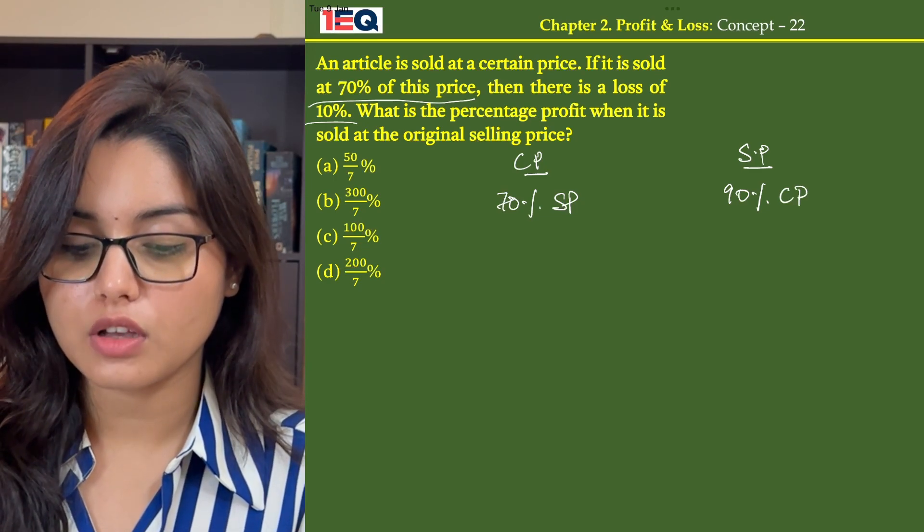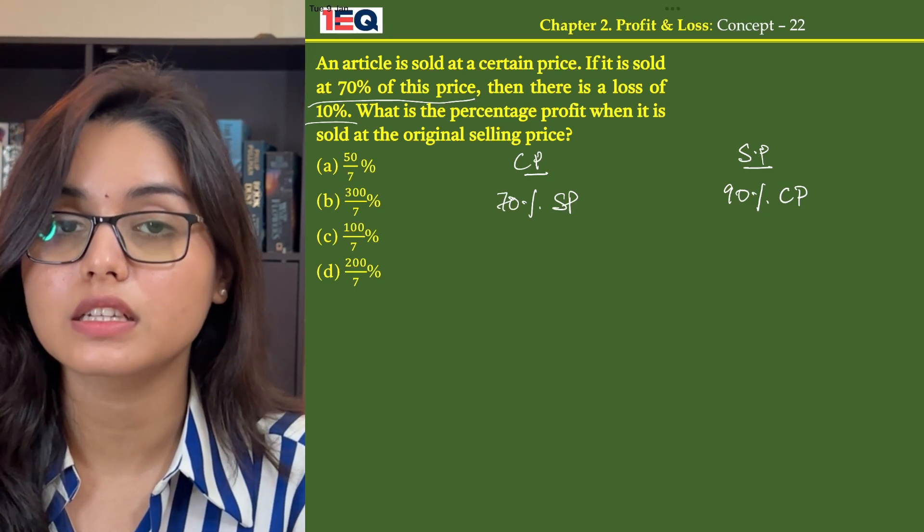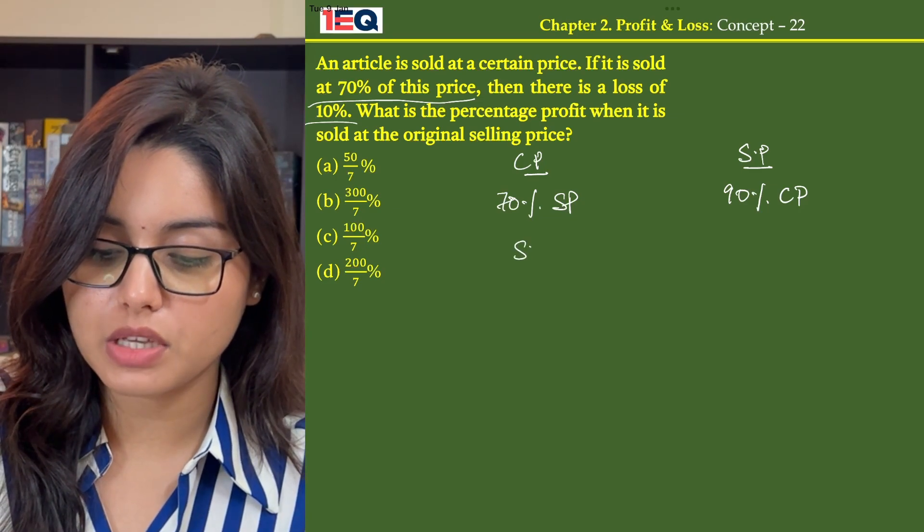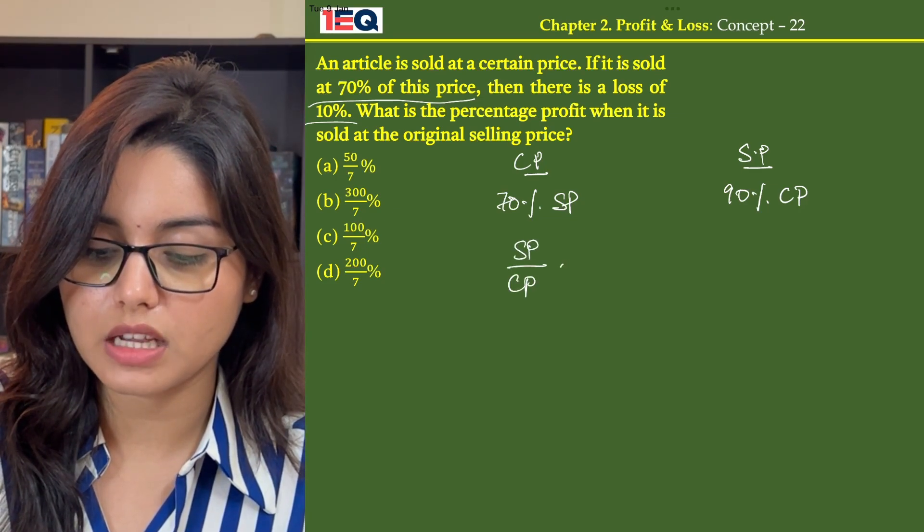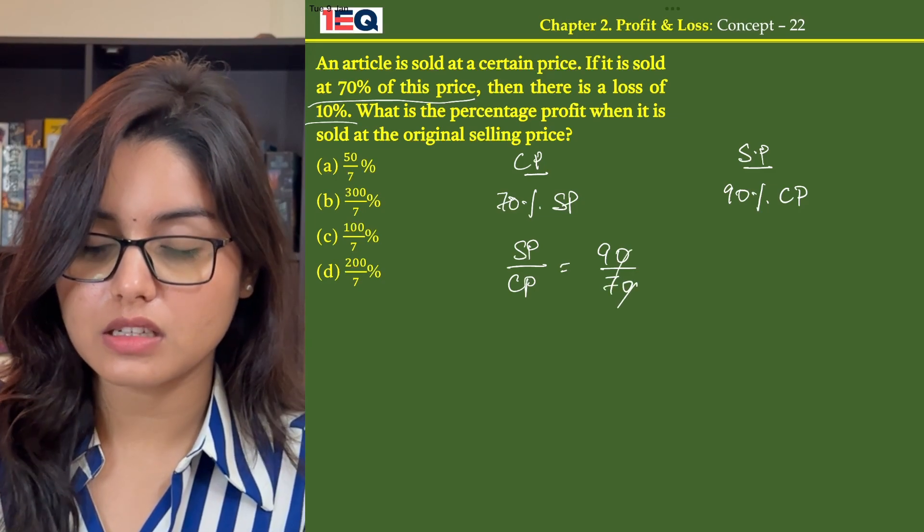Now, if you are selling something at a loss of 10%, that means you are selling it at 90%, so 90% of CP. Now taking the SP to CP ratio, we get 90 by 70, that is 9 by 7.